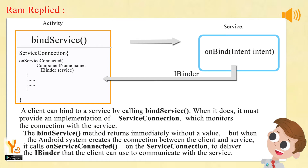A client can bind to a service by calling BindService. When it does, it must provide an implementation of ServiceConnection, which monitors the connection with the service. The BindService method returns immediately without a value, but when the Android system creates the connection between the client and service, it calls OnServiceConnected on the ServiceConnection to deliver the IBinder that the client can use to communicate with the service.